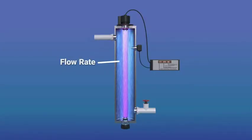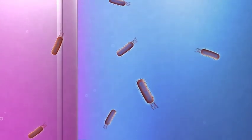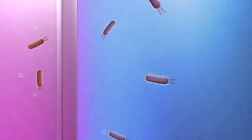Because cells have to be exposed to enough light, it's important to control flow rate and make sure all water is exposed for enough time. If water flows too quickly, UV light can't disinfect it.